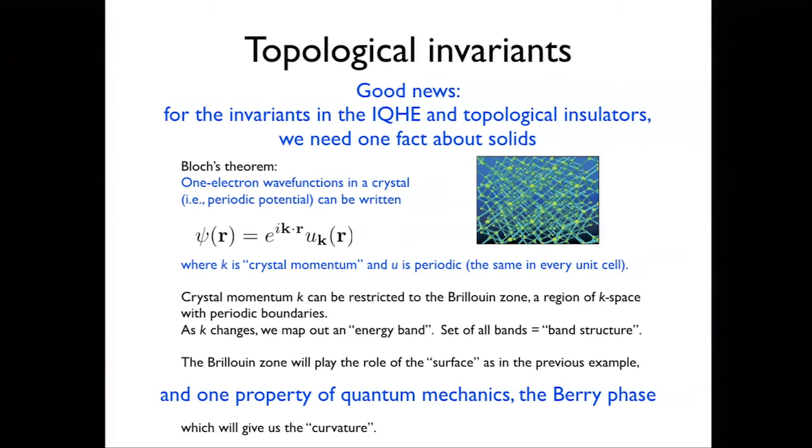We're going to make something like that out of wave functions in a crystal quite soon. The one fact I hope you've seen before, because I'm going to assume it, is that when you put an electron in a crystal you can write its wave function in a form which is a plane wave times a part which is periodic with the same periodicity as the crystal. We call this Bloch's theorem. The momentum that appears here doesn't live in the whole plane. It lives in the Brillouin zone, which is effectively a d-dimensional torus. That's going to be the surface. We need to make a curvature out of the wave functions and integrate it over the Brillouin zone.